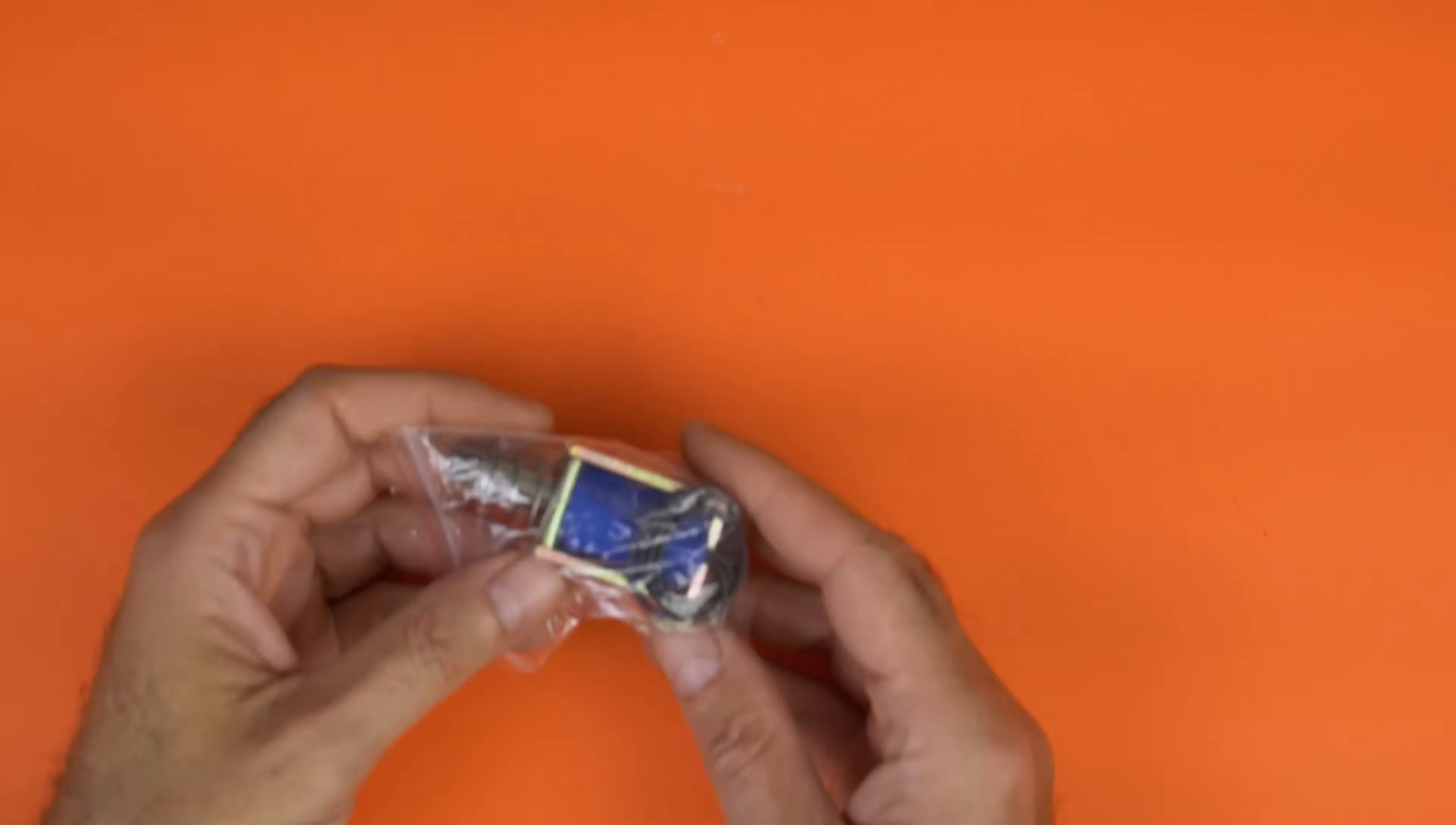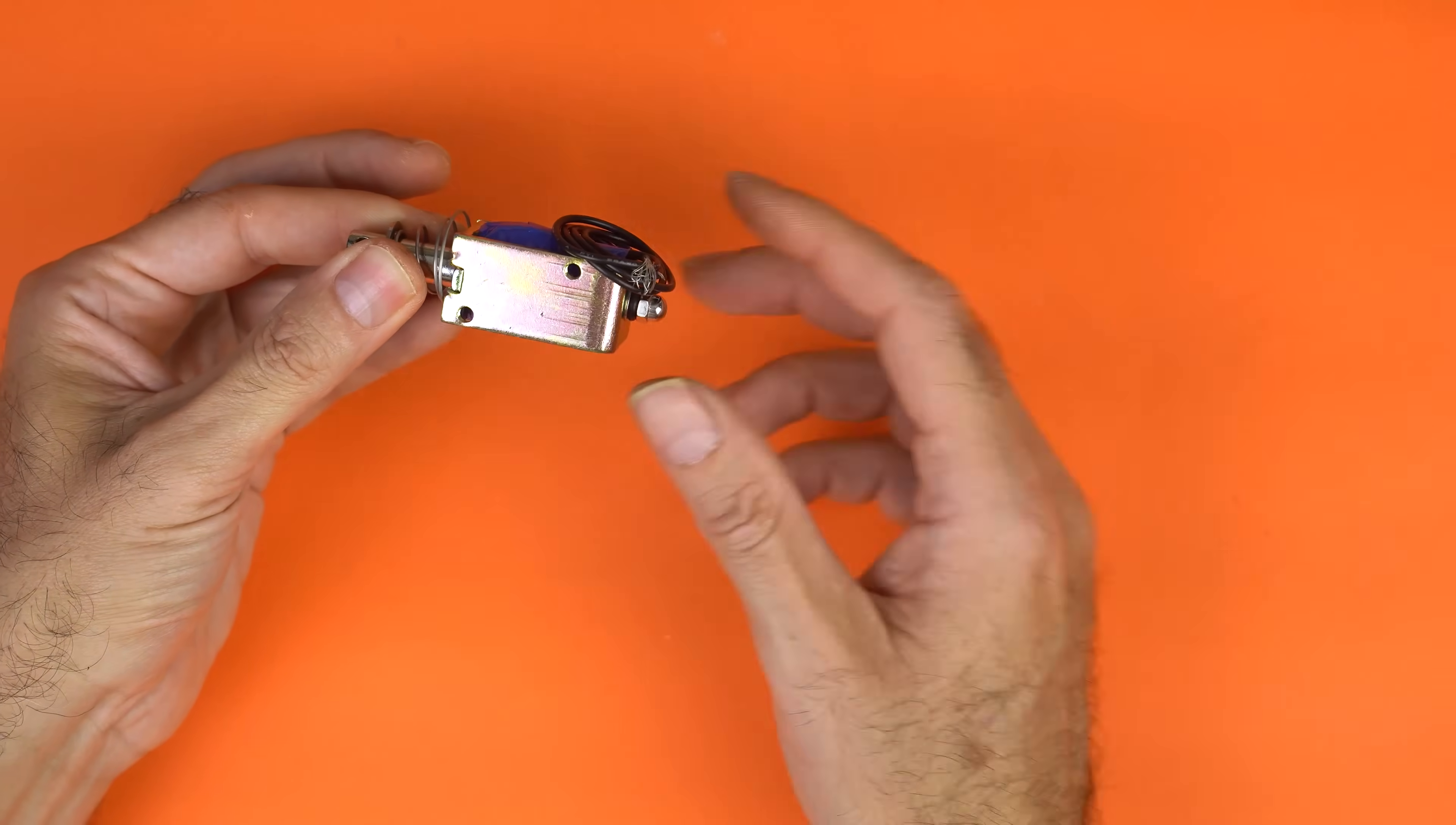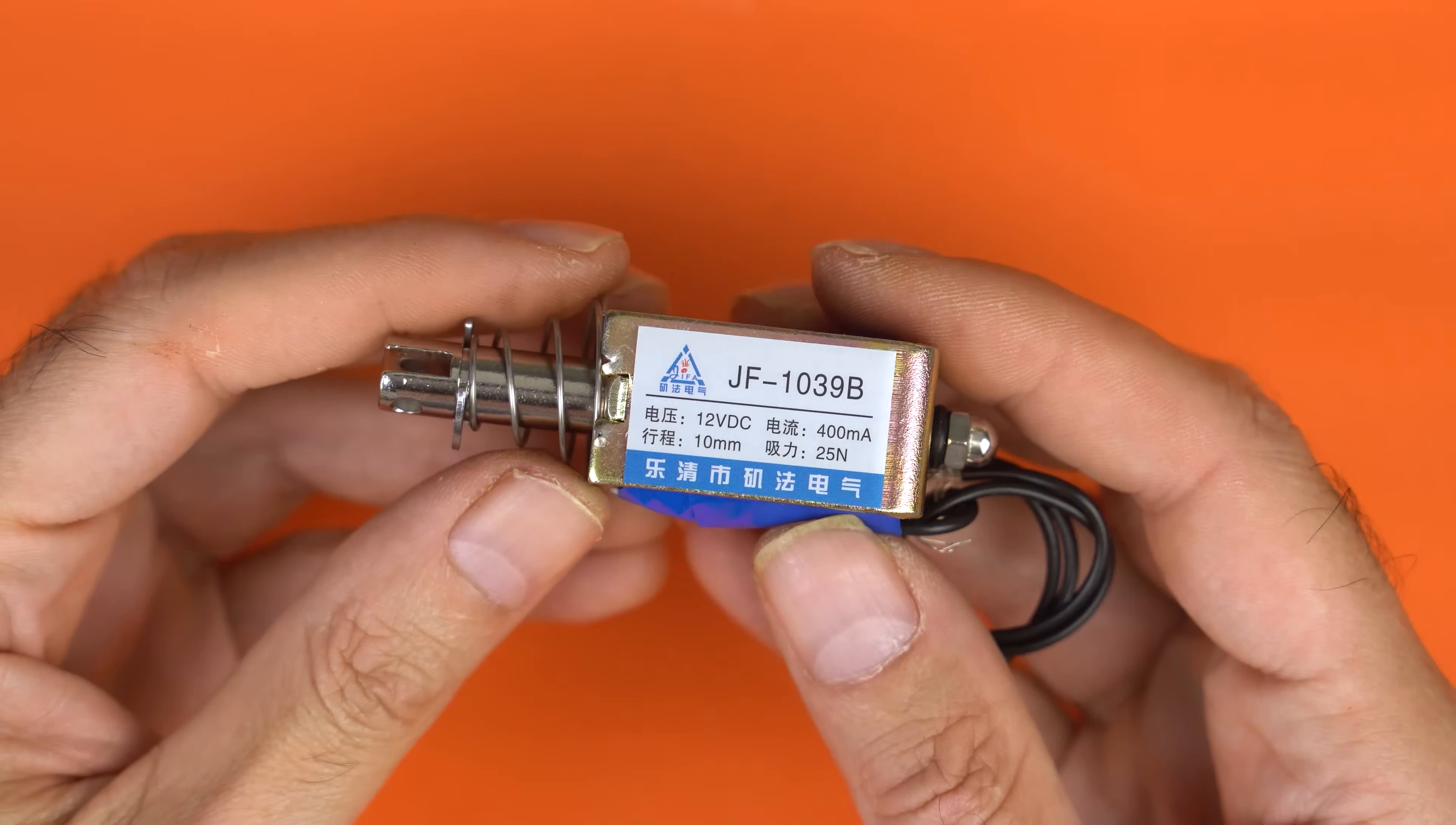Now that we have all this information, let's build our own flipper assembly. Unfortunately, we can't use the same switching mechanism we just saw, because dual winding coils are no longer available. So I came up with a DIY alternative that works in the same way.